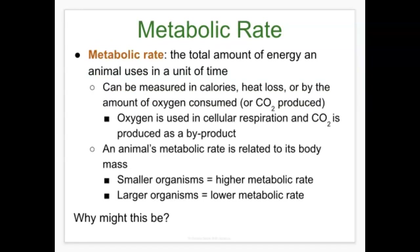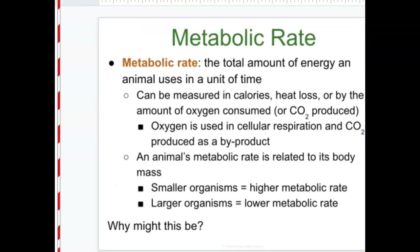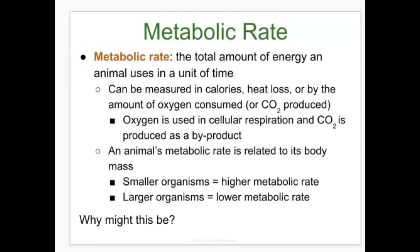When we think of organisms and energy, we think of metabolism. Metabolism describes the totality — the sum of all the chemical reactions within a living thing. The metabolic rate is the total amount of energy an animal uses in a unit of time. It can be measured in calories — the amount of energy required to change the temperature of one gram of a substance by one degree Celsius — or in terms of heat loss, or the consumption and production of gases like oxygen and carbon dioxide.